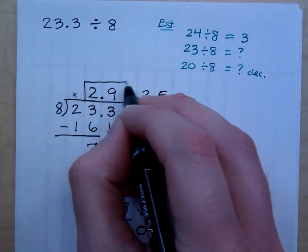Now look at my answer. My answer is 2.9125. What was your estimate? Three. So does this seem appropriate? Yeah, this seems appropriate. So this is my answer.